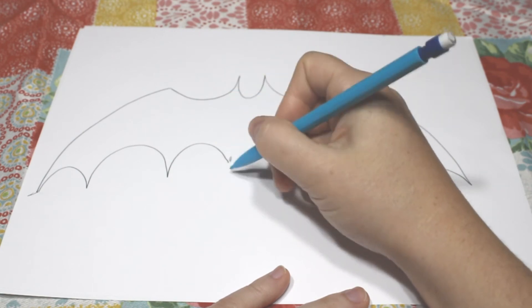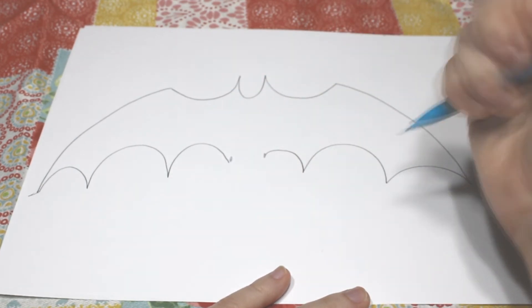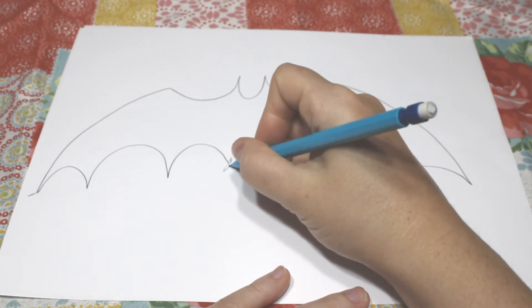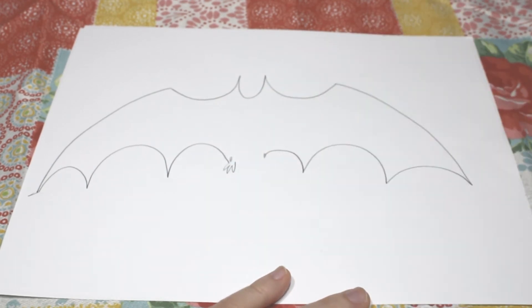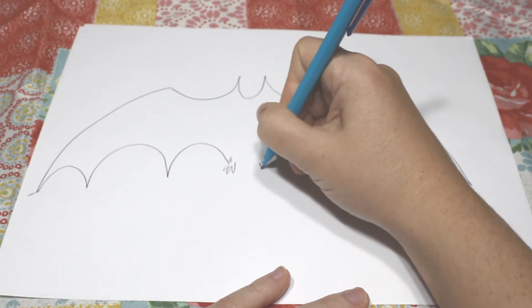So now, right here, we're going to put the little bat feet. So we'll go zig, zig, zag. Little bat foot. The other one, we've got to put his other little foot. Zig, zig, zag.